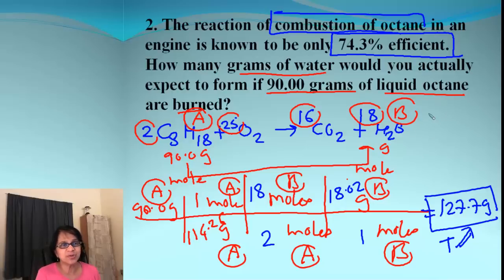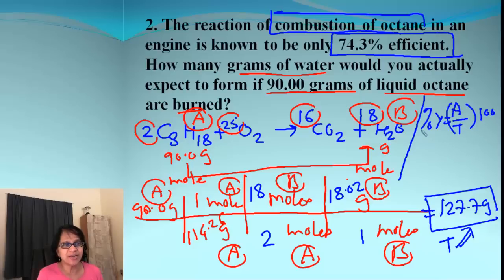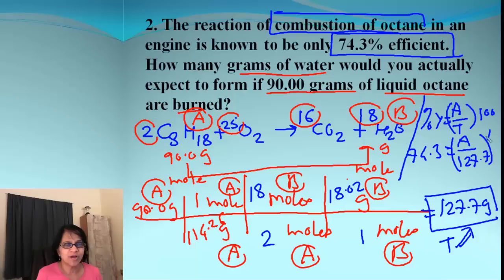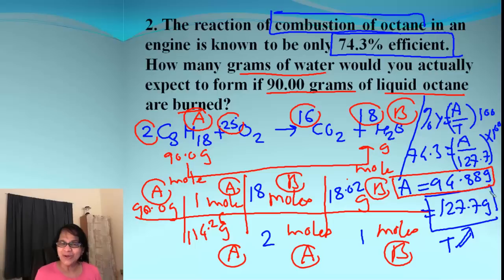Remember, 127.7 grams is the theoretical yield, not the actual yield. To find the actual yield, use: percent yield equals actual divided by theoretical times 100. Plugging in: 74.3 equals A divided by 127.7 times 100. Solving for A, the actual yield is 94.88 grams. It's simple algebra. Don't you think it was easy to find percent yield? I hope you enjoyed the video — see you next time, bye!